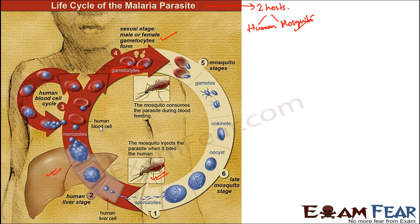When the liver cells burst, their contents are released into the blood. Inside each liver cell the sporozoids undergo asexual reproduction and keep increasing in number until the cell bursts and the spores are released into the bloodstream. Asexual reproduction then continues inside the red blood cells as well — inside each red blood cell the sporozoids multiply until the red blood cells also burst.